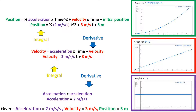In this video, we'll be going over how calculus is tied to the position formula, velocity formula, and acceleration formula. Throughout this video, we'll be using the givens: acceleration equals 2 meters per second per second, initial velocity is 3 meters per second, and the initial position is 5 meters.